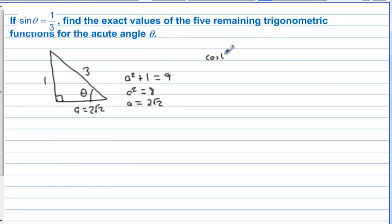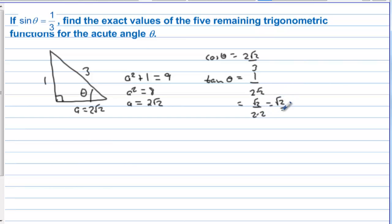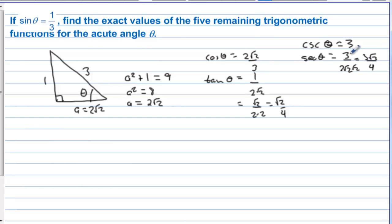We already know the sine. Cosine of theta is adjacent over hypotenuse, which is two square root of two over three. Tangent of theta is opposite over adjacent, which is 1 over two square root of two. Rationalizing, we get square root of two over four. Cosecant of theta is 3. Secant of theta is 3 over two square root of two, which rationalizes to three square root of two over four. And cotangent of theta is two square root of two.